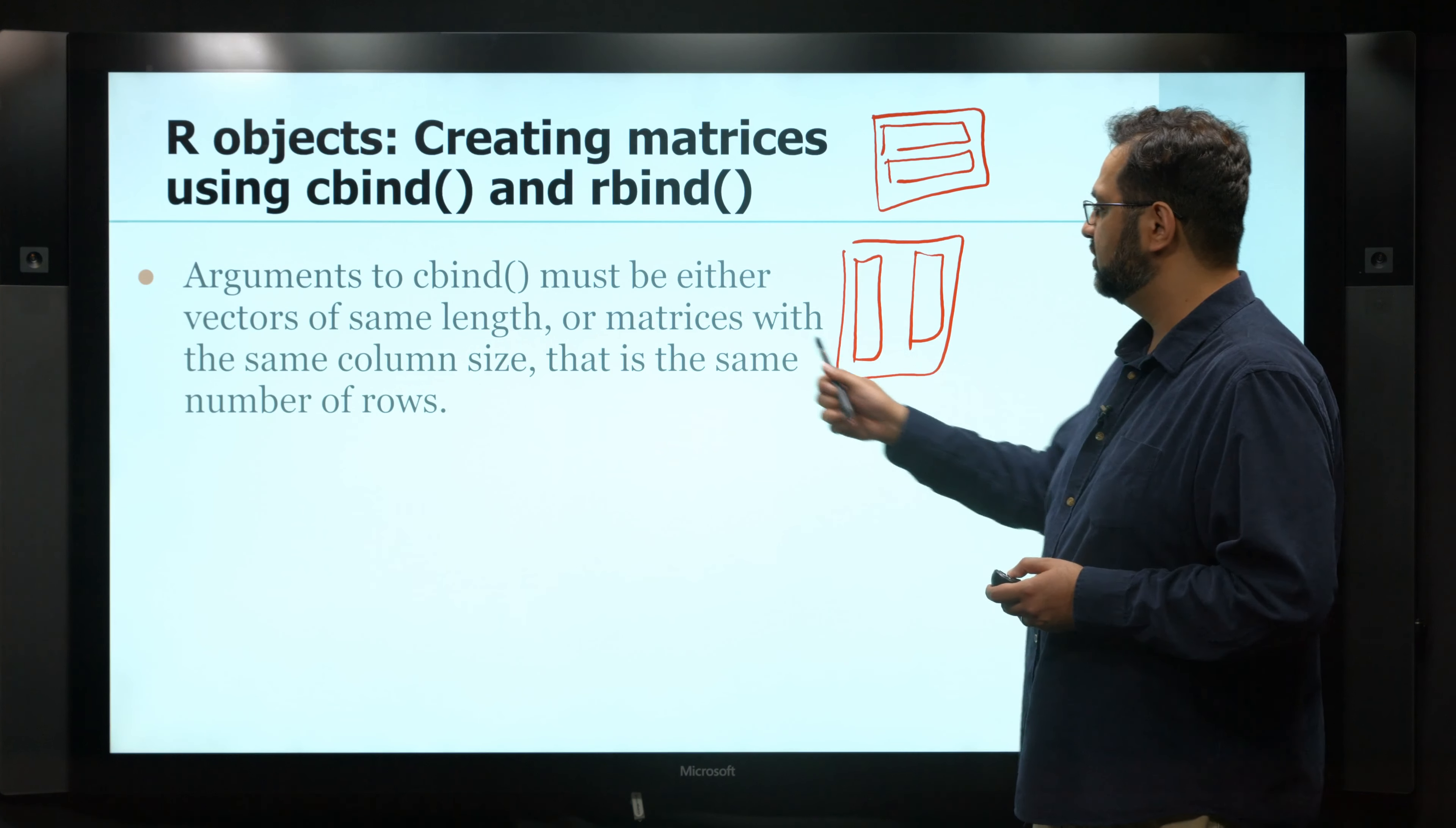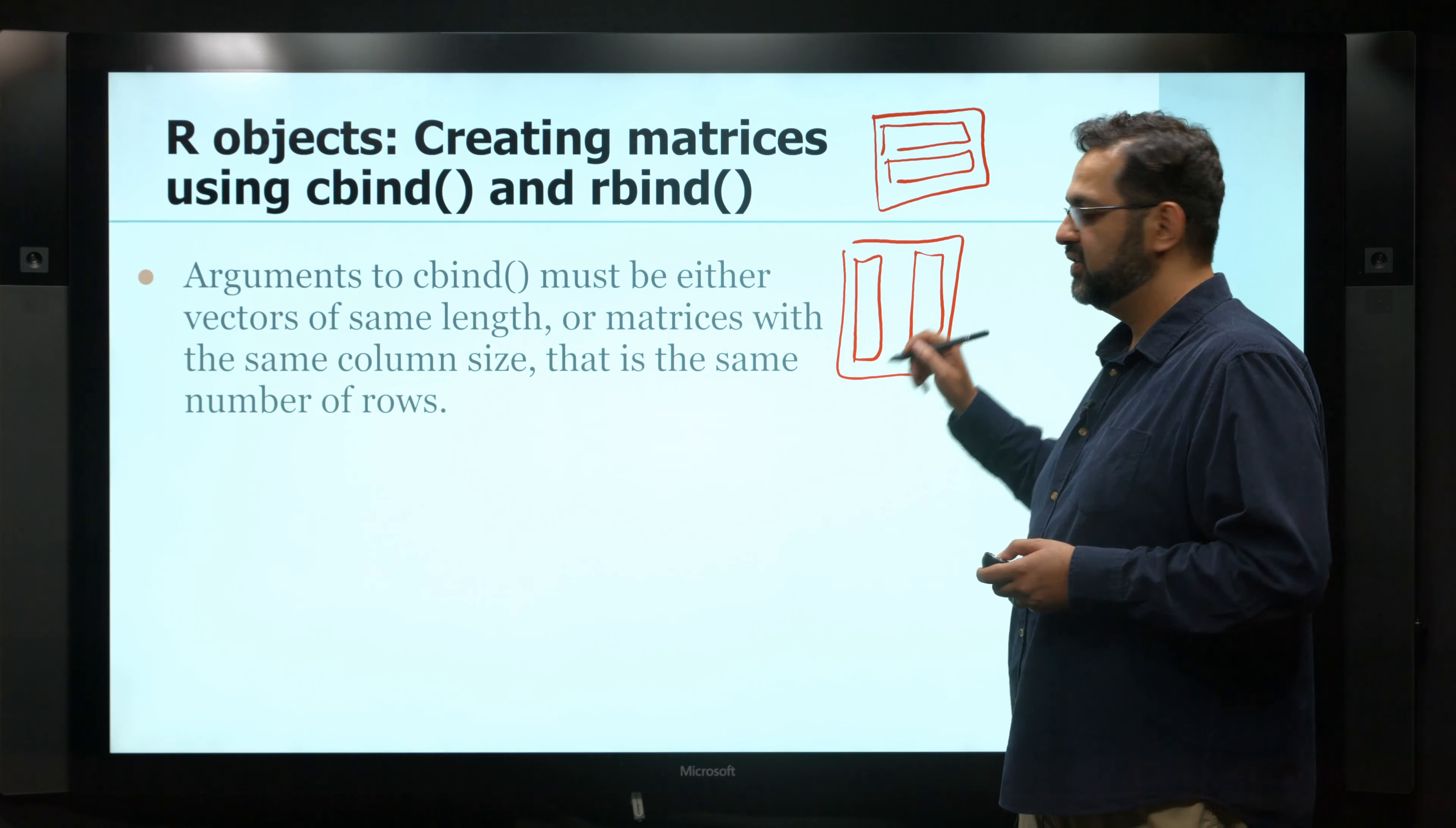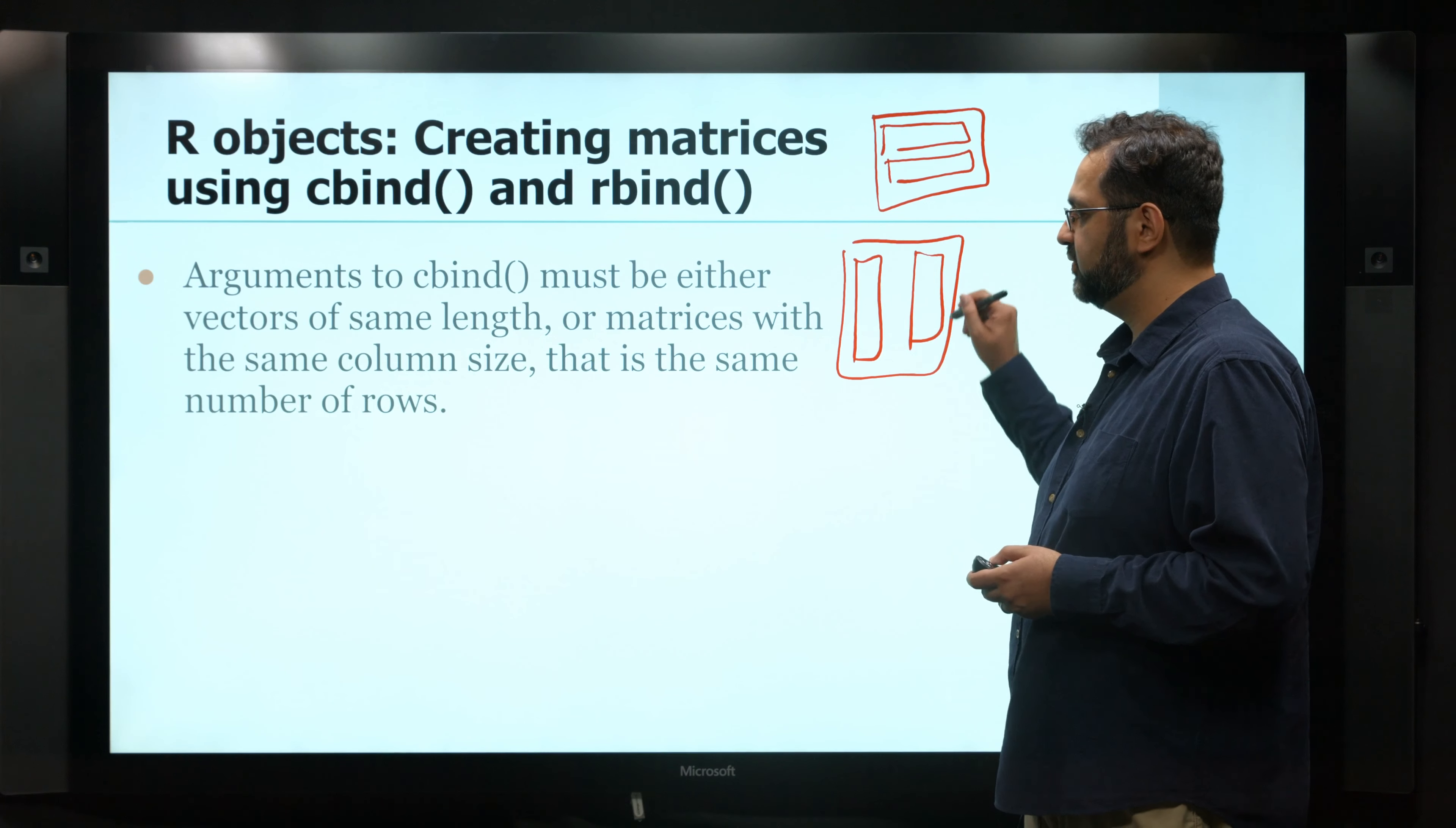So the thing you have to keep in mind is that the vectors have to be the same length. So the matrix, again, has to be of the same size. So you have to have the same number of values that come together. So it has to be a perfect rectangle square, however you want to think about it. So it always has to have the same number of rows, so it makes a perfect square.